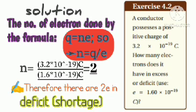A conductor possesses a positive charge of 3.2 times 10 raised to minus 19 coulombs. How many electrons does it have in excess or deficit? Given: e equals 1.6 times 10 raised to minus 19 coulombs.